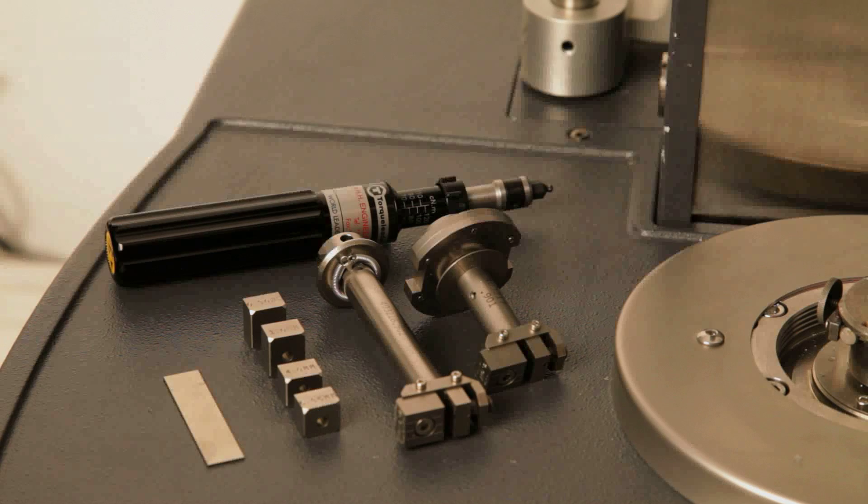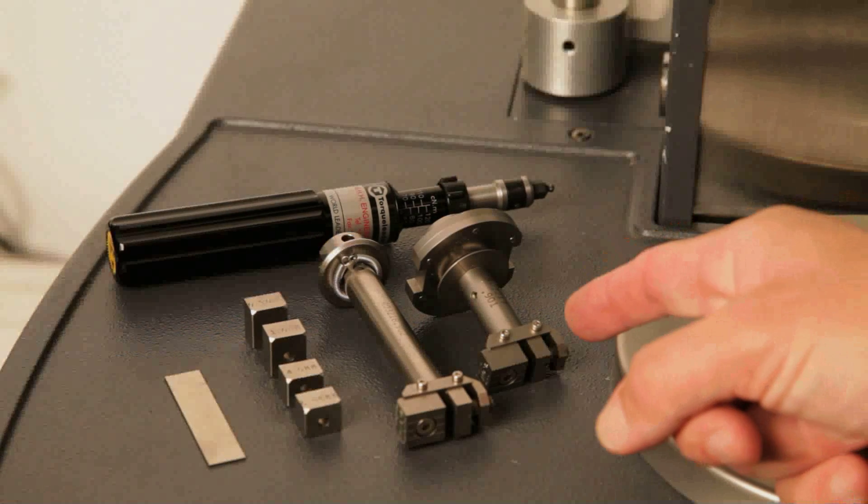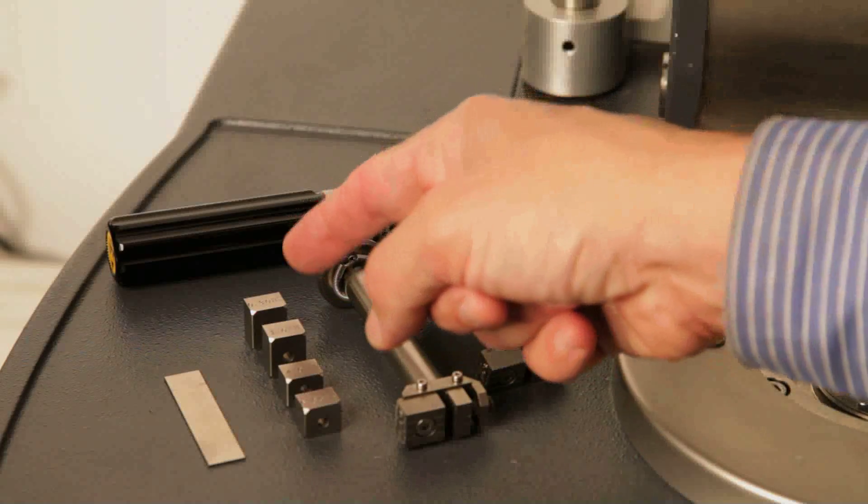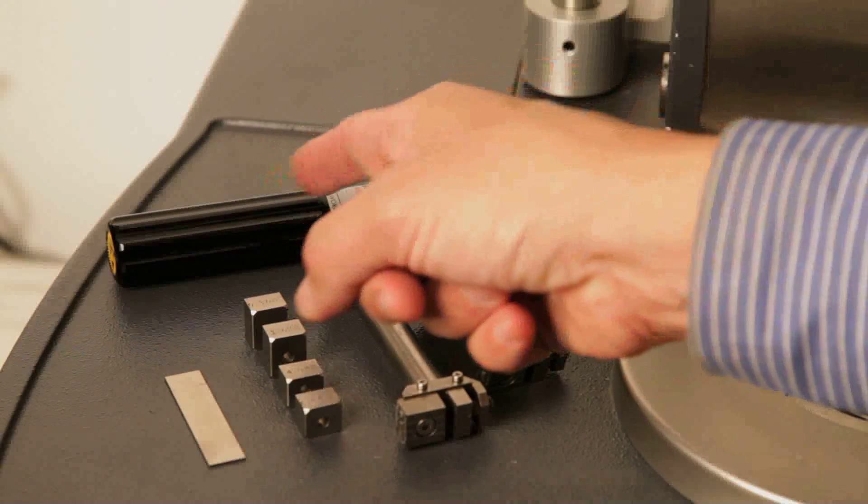The torsion kit includes the lower clamp fixture, an upper clamp fixture, inserts for various sample thicknesses, and a torsion wrench.